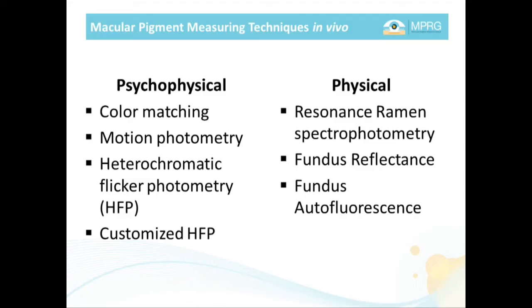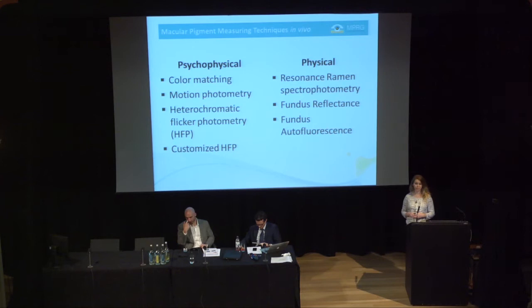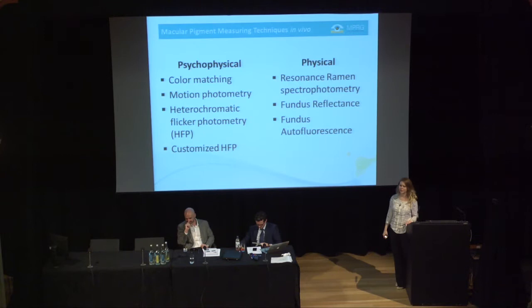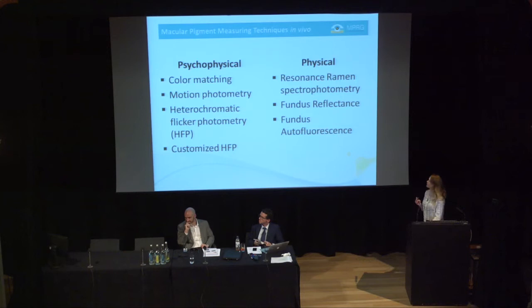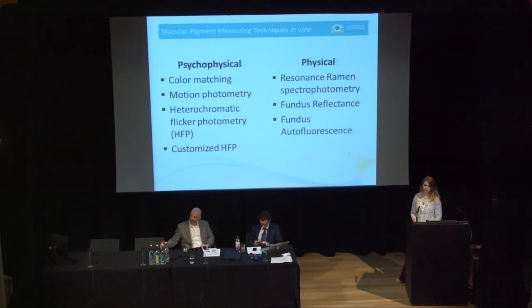There are several different techniques to measure macular pigment in the person. All these techniques are very different, but as Shoba was talking about before, it's important to be consistent with how you measure macular pigment. Psychophysical measurements require subject input. Color matching and motion photometry have mostly gone out the window; heterochromatic flicker photometry and customized heterochromatic flicker photometry have superseded those. Physical methods require minimum subject input — sometimes called optical or objective methods. These include resonance Raman spectroscopy, fundus reflectometry, and fundus autofluorescence.